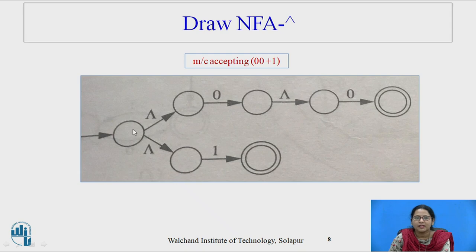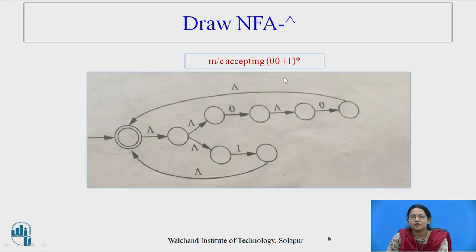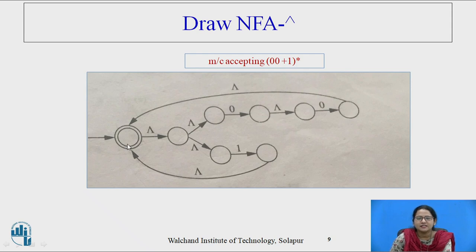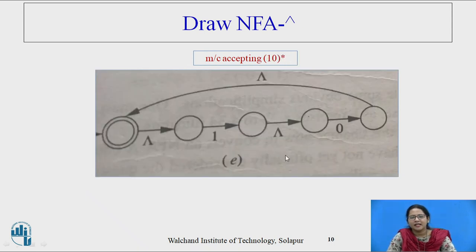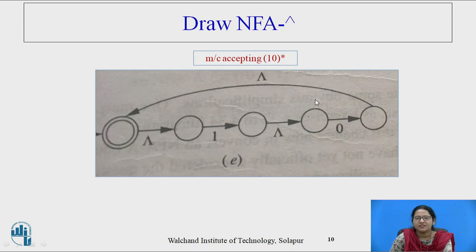Next is 00+1 — an extra state is added as initial state, connected to each original initial state with a null transition, and both accepting states remain. Next is (00+1)*: a new state is connected from the final states with null transitions and the initial state also acts as an accepting state; all other accepting states are cancelled. Then 10*: a new initial state is connected with a null transition to the original initial; that new initial state acts as an accepting state and is connected from the original accepting state with a null transition.